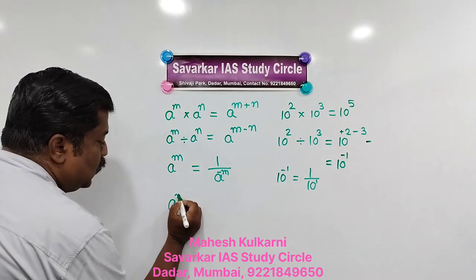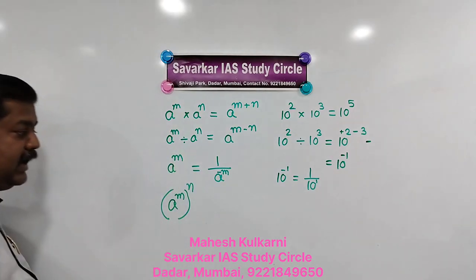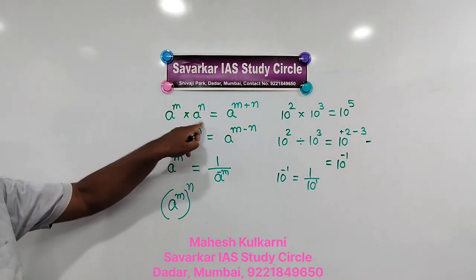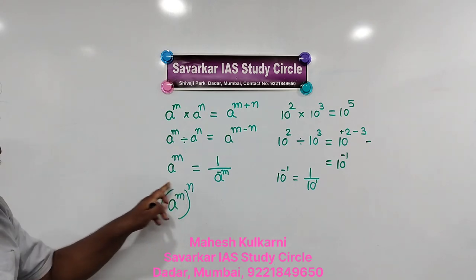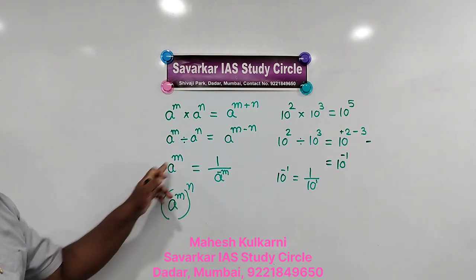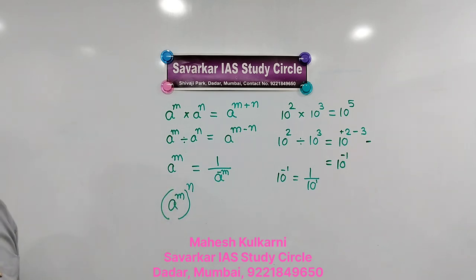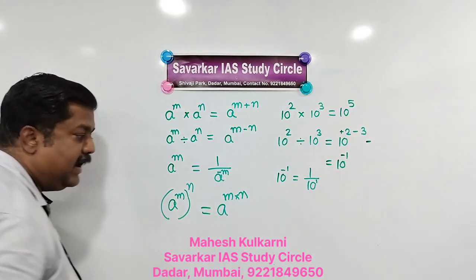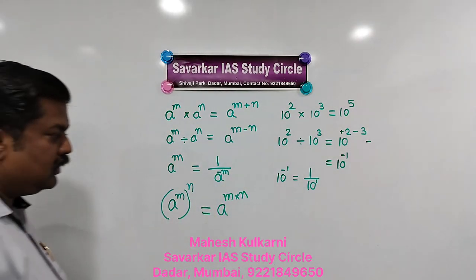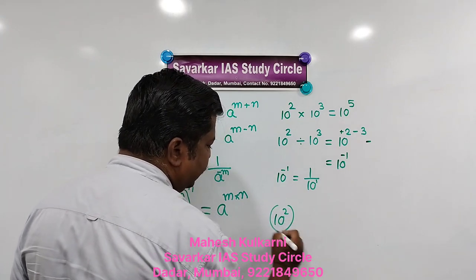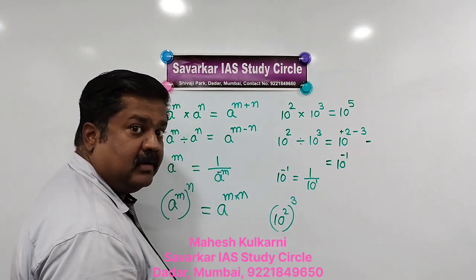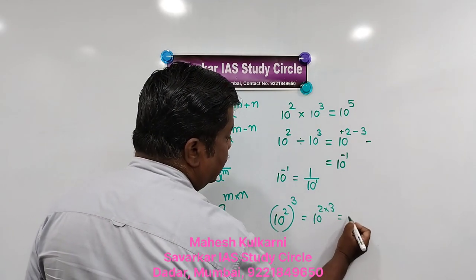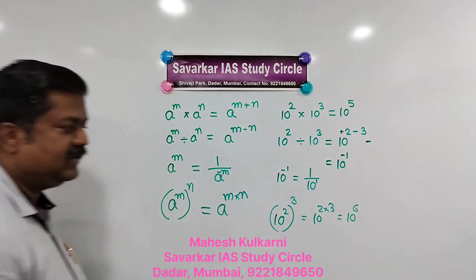Last law: A raised to M, whole bracket raised to N. Here A raised to M is not being multiplied by A raised to N — rather, the result of A raised to M is itself raised to N. In this case, the answer is A raised to M times N. So here 10 raised to 2, whole raised to 3, gives 10 raised to 2 times 3, which equals 10 raised to 6.